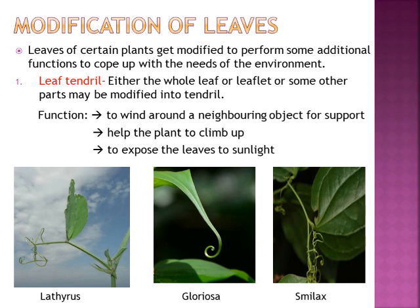The first modification of leaves is the leaf tendril. In some weak stem plants, either the whole leaf, or a leaflet in a compound leaf, or some other parts may be modified into a tendril. Sometimes stipules or other parts are also modified into a tendril. These tendrils are coiled, thread-like structures which generally help in giving support to the plant and also help it to climb onto a nearby structure.